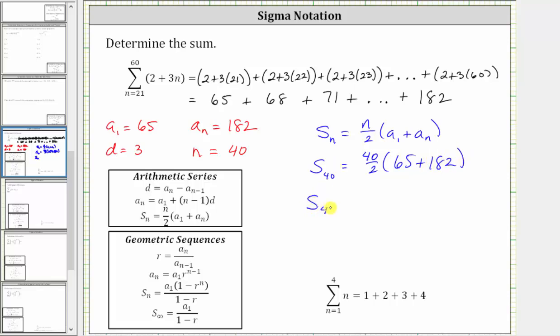Simplifying we have S sub 40 is equal to 40 divided by two is 20. 65 plus 182 is 247. And 20 times 247 is equal to 4940.